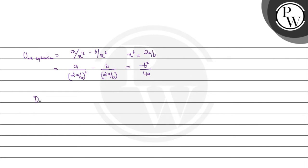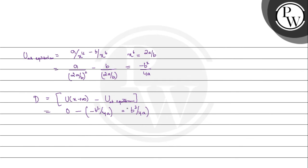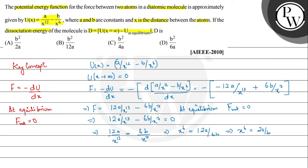The dissociation energy D = U(x at infinity) minus U at equilibrium = 0 minus (minus b²/4a) = b²/4a. So our final answer is option C: b²/4a. I hope you understood it well — best of luck!